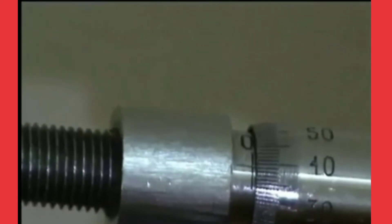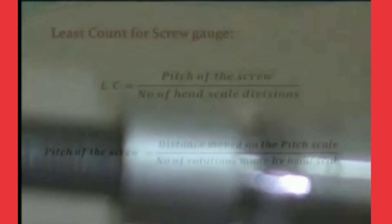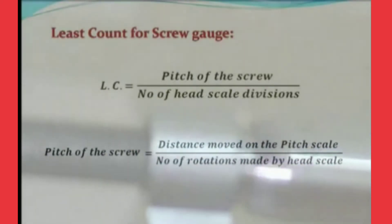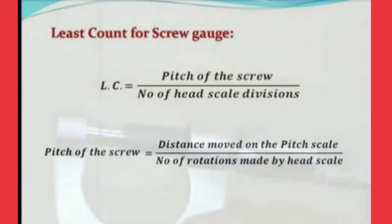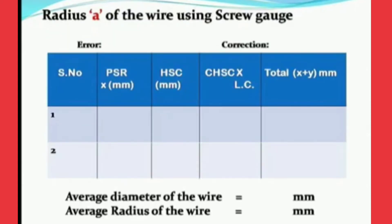During the experiment, first we need to collect the least count of screw gauge and error of the screw gauge also. Then we need to take the readings for three to four times to get the accurate value of the radius of the wire.